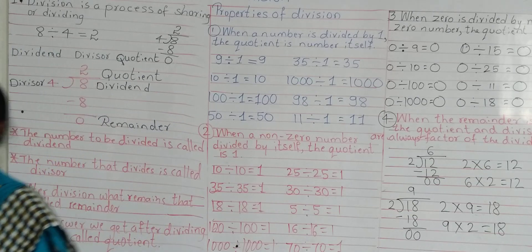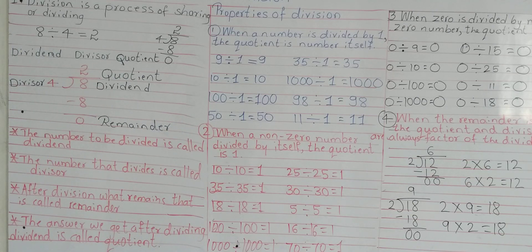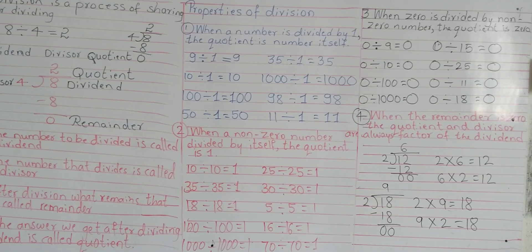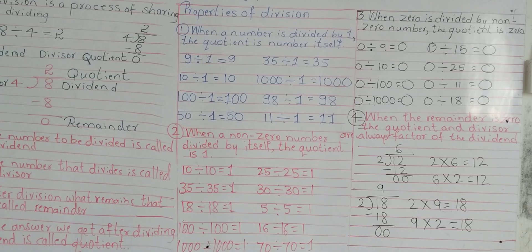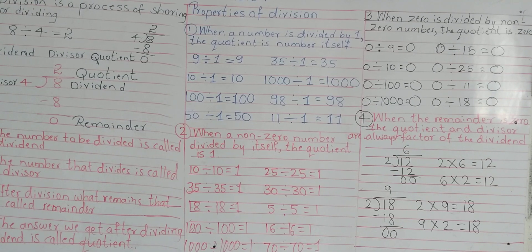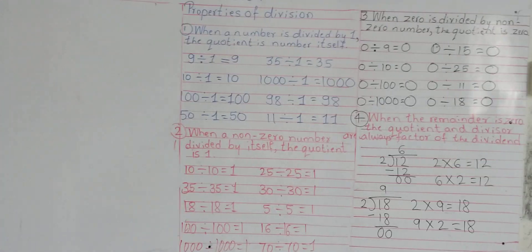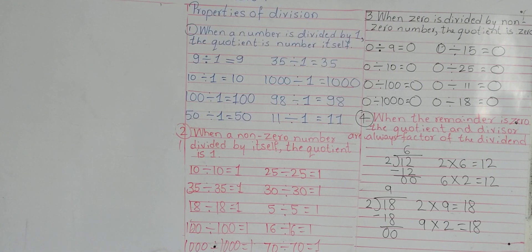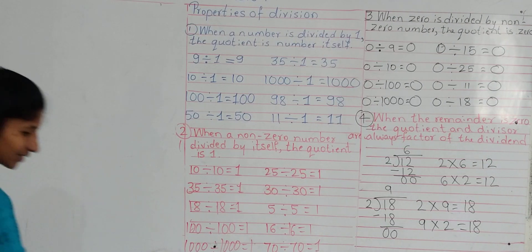So these are the 4 properties of division which you have to learn. If you are able to recall these properties, you can solve the problems based on them. They can also ask multiple choice questions based on division properties. Now let's practice to find the quotient.